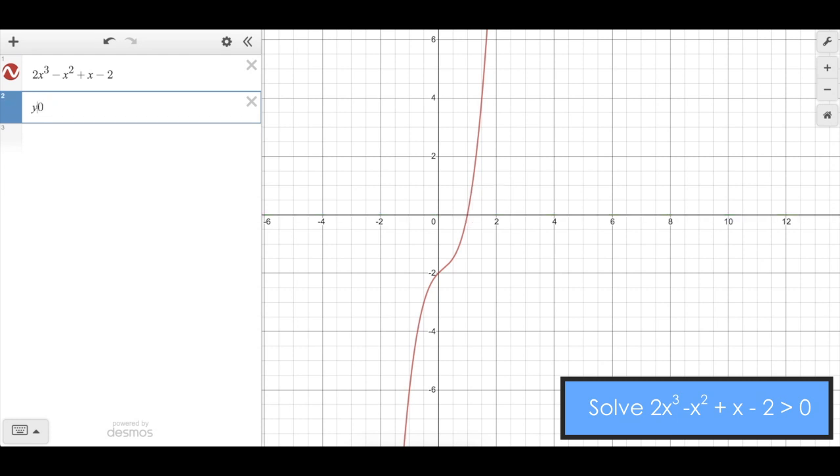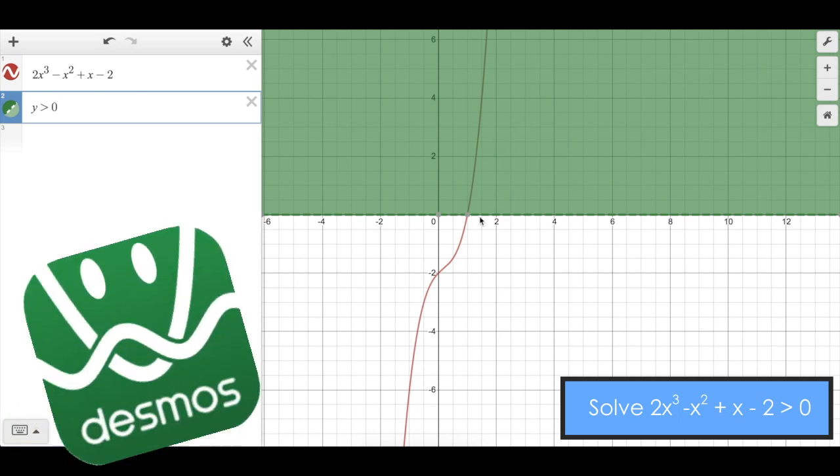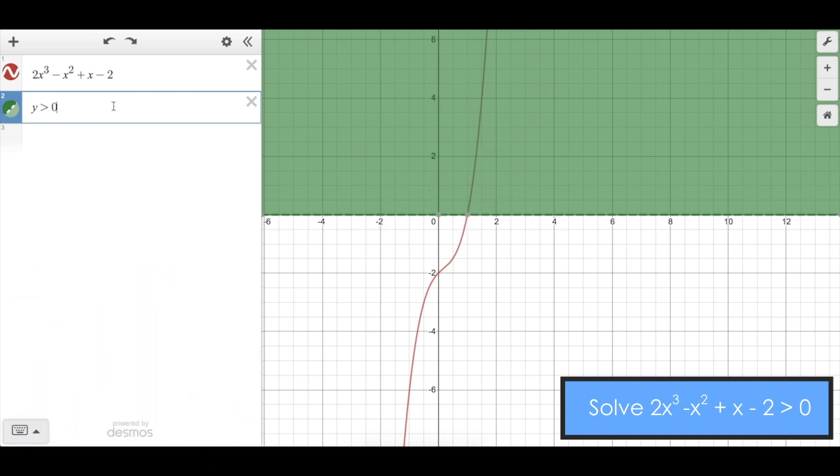Now if I change that equals sign to a greater than symbol, Desmos will even shade the region where this function is greater than zero. So that's really it for finding out where a polynomial is greater than zero. It can be done very easily just by understanding how to read a graph.